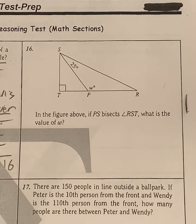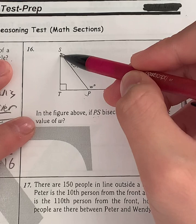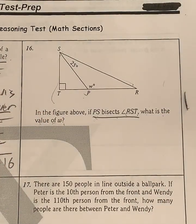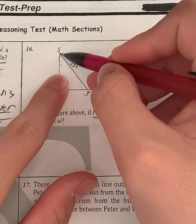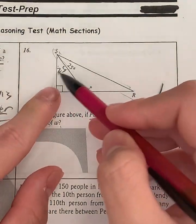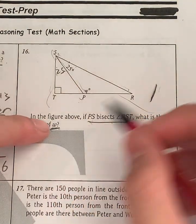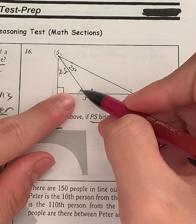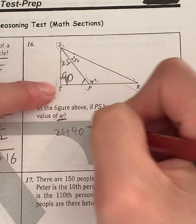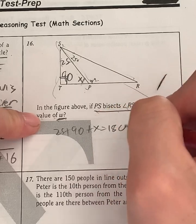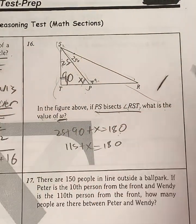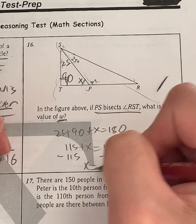Moving on. We have question 16. In the figure above, if PS bisects angle RST, what is the value of W? PS bisects angle RST. What does bisect mean? It means it divides the angle into half. So this angle right here equals this angle because they're equally divided. So I know this angle should be 25 because SP bisects this angle. These two angles should be equal. Now, given this information, what's the angle of W? I know that in order to find W, I should probably find this angle right here. We know this box—what does that mean? It's a 90 degree angle. So it's 25 and 90, 25 plus 90 plus this angle, which I'll call X. That should sum up to 180 degrees because this is a triangle inside and they all sum up to 180 degrees. Simplify: 115 plus X equals 180. In order to get X, we just minus both sides by 115, giving us X equals 65.